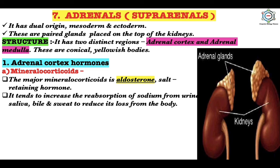The adrenal cortex hormones include: first, mineralocorticoids — the major one is aldosterone, the salt-retaining hormone. It increases reabsorption of sodium from urine, saliva, bile, and sweat to reduce its loss from the body. It also increases elimination of potassium in exchange for reabsorbed sodium, and increases reabsorption of water from urine by raising the osmotic pressure of the blood, thereby maintaining water and electrolyte balance and blood volume in the body.